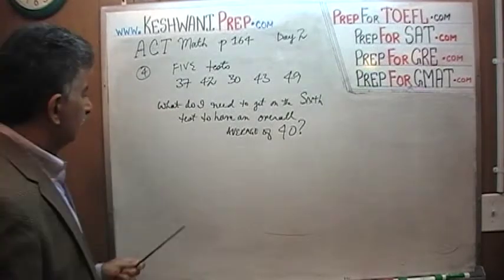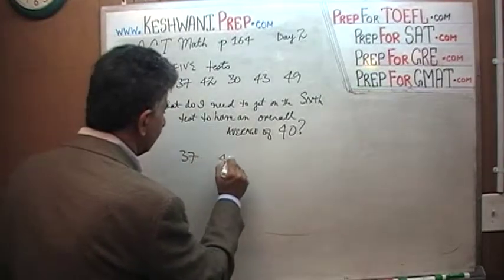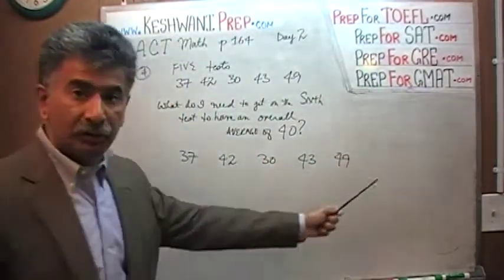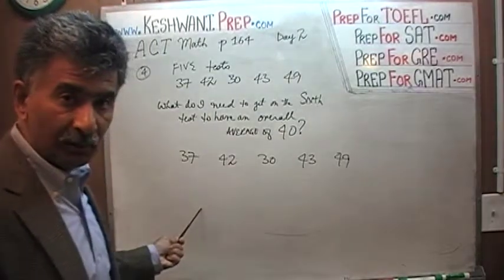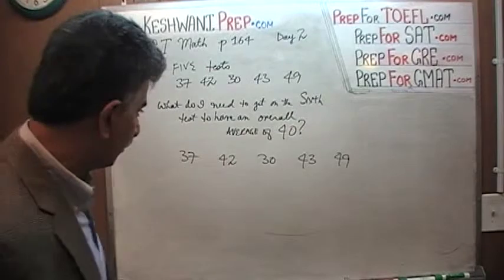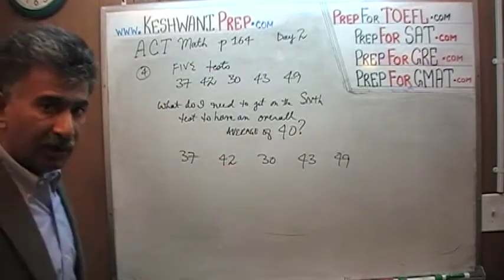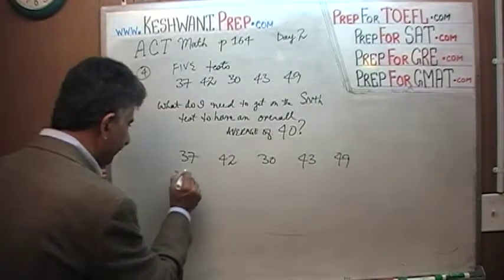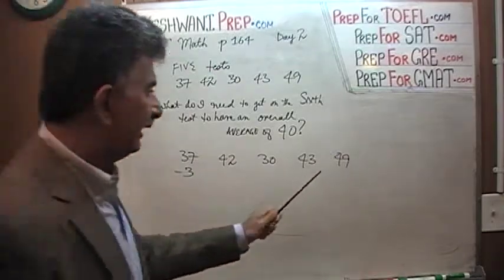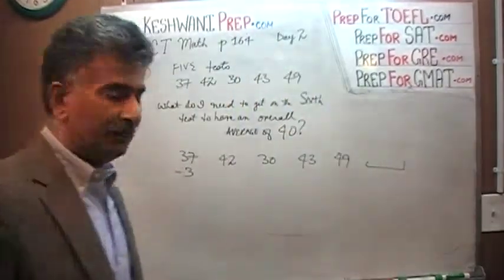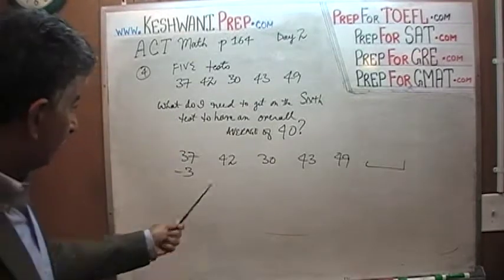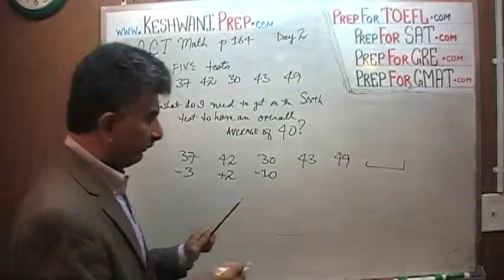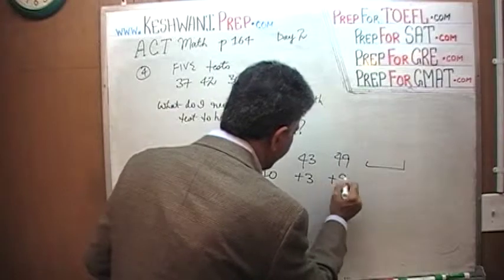We're not going to do the traditional method at all. My target was 40, the bullseye was 40. Did I get 40 points in the first exam? No, I have a deficiency of three points. I have a surplus here of two points. I have a deficiency of ten points. I have a surplus of three points. And finally, I have a surplus of nine points.